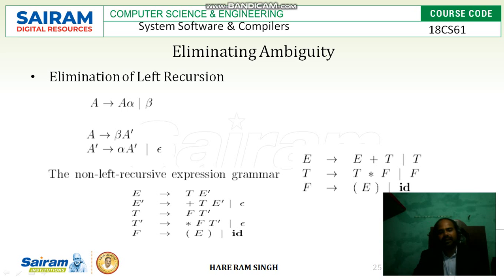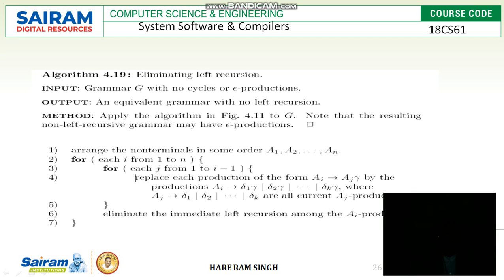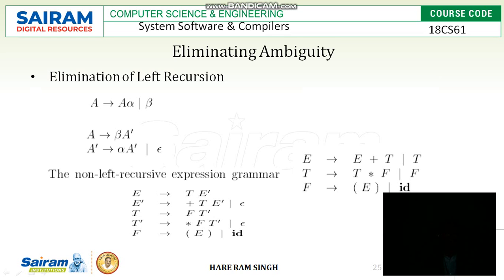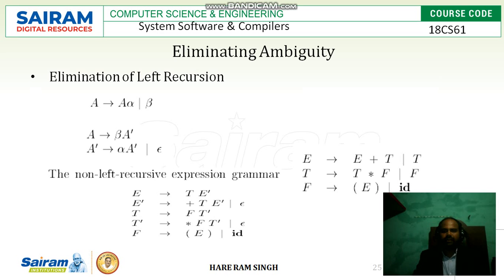Now we have an algorithm to eliminate the left recursion. The first step says: arrange the non-terminals in some order A1, A2, ..., An. We have arranged all the non-terminals E, T, F in order. Here N is 3 because we have three non-terminal variables: E, T, F.